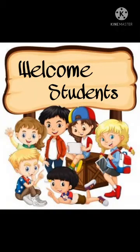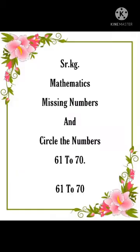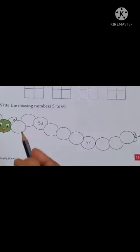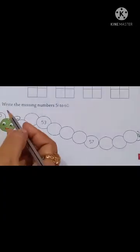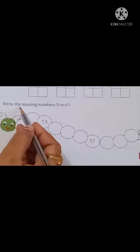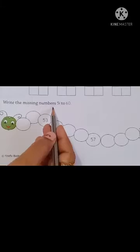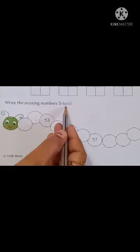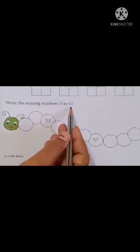Welcome students. Senior KG Mathematics: Missing Number and Circle the Numbers 61 to 70. Today we are going to learn: Write the Missing Numbers 51 to 60.